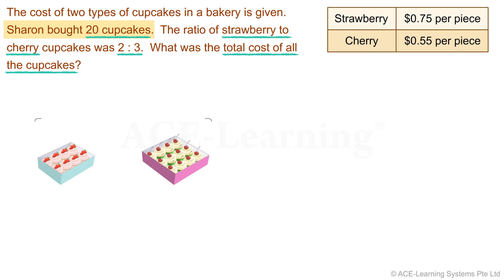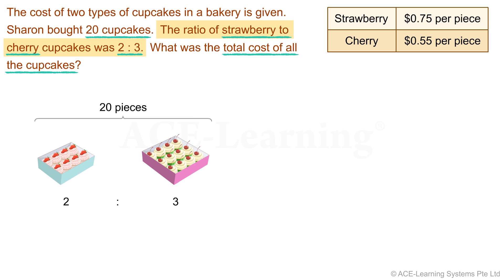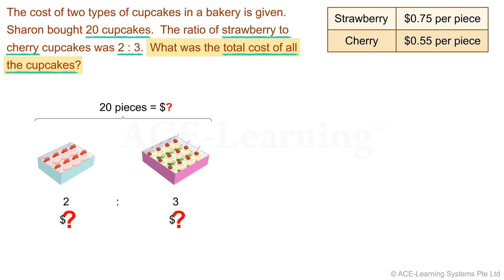She bought a total of 20 cupcakes. The ratio of strawberry to cherry cupcakes was 2 to 3. That means, for every two strawberry cupcakes, Sharon bought three cherry cupcakes. We are required to find the cost of all the cupcakes bought. To do that, we have to find the total cost of each type of cupcake first, before we can find the total cost.